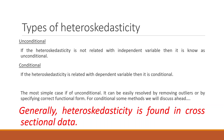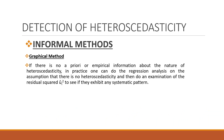There are two types of heteroscedasticity. One is unconditional — if the heteroscedasticity is not related to the independent variable, it is known as unconditional. If it is related to the dependent variable, then it is conditional. Generally, heteroscedasticity is found in cross-section data.